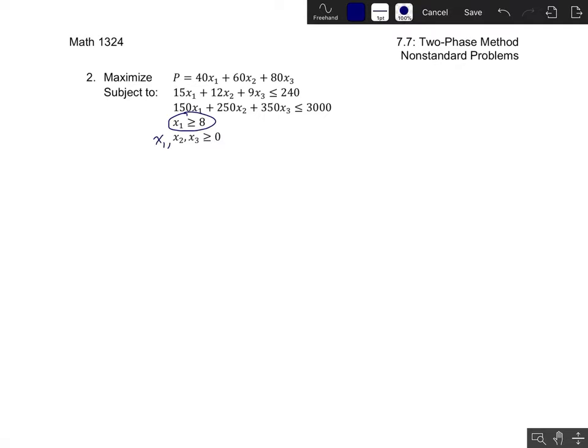Notice that x1 is also omitted from the non-negativity assumption down here at the bottom. That's just because it would be redundant to say that x1 needs to be greater than or equal to zero, because we already require that x1 is greater than or equal to eight. So we don't really need that last one.